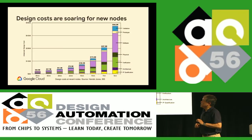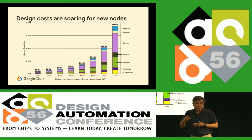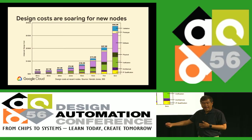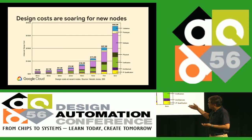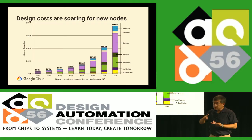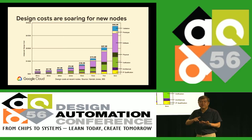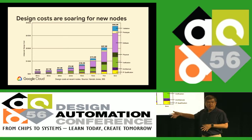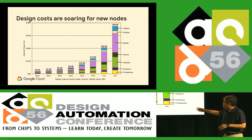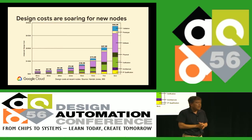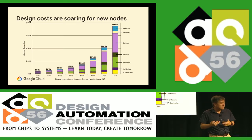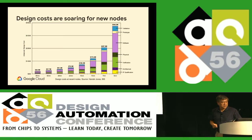It gets worse. The design costs, as process nodes get more advanced, are escalating exponentially. A few years ago when we were doing the TPU, the cost of the entire development — including software, prototyping, manufacturing, masks, everything — was around a hundred to a couple hundred million dollars. But as we progress to seven and five nanometers, these costs are escalating pretty severely, making it harder and harder to keep up with technology.